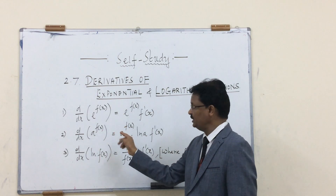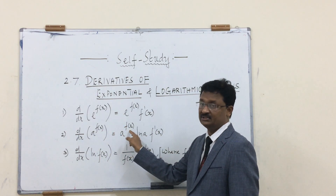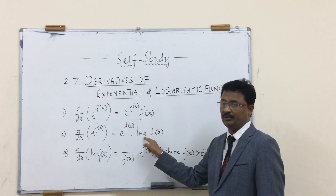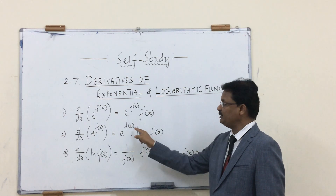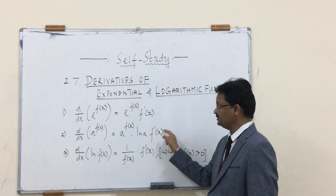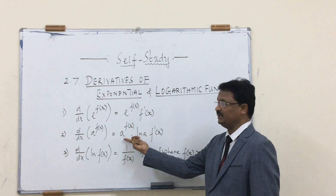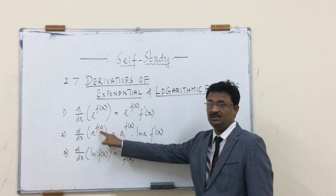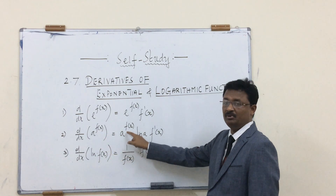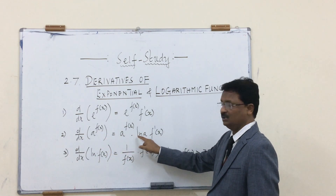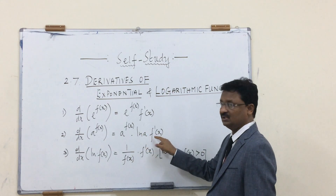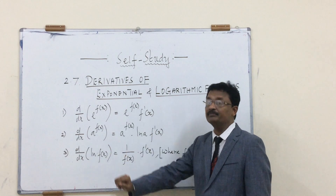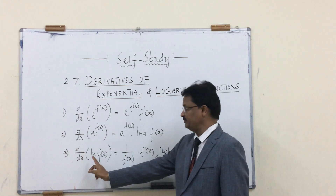Rule number two: how to differentiate a to the power of f(x)? The derivative is a to the power of f(x) times ln(a) times f′(x). This is because the derivative of a to the power of a function is a to the power of f(x) times ln(a) times f′(x).